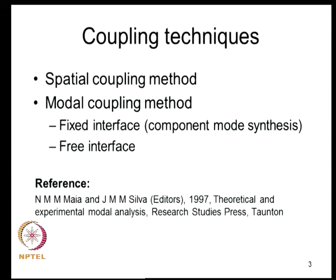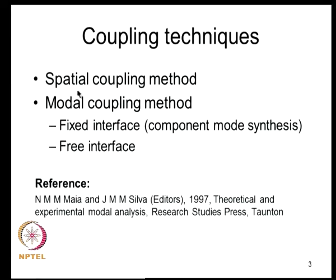Coupling techniques can be classified into two categories: spatial coupling method and modal coupling method. In modal coupling there are two further classifications: fixed interface and free interface. The main distinguishing feature is that in the modal coupling method the coupling matrices are derived in terms of eigen solutions of the substructures, whereas in the spatial coupling method the coupling matrices are derived in terms of the substructure structural matrices—mass, stiffness, and damping—so no eigen solutions need to be computed.